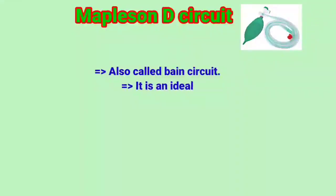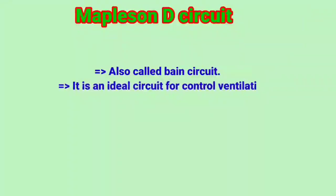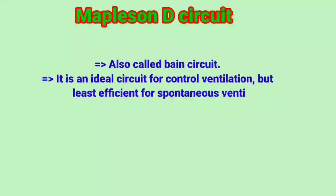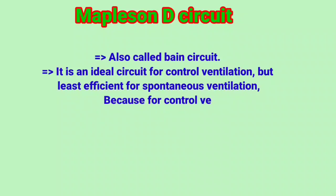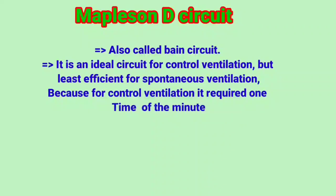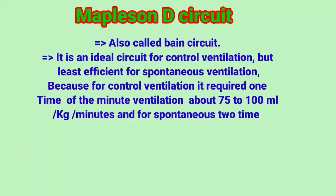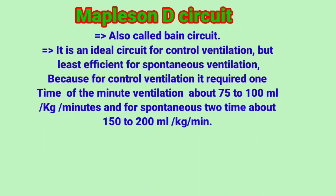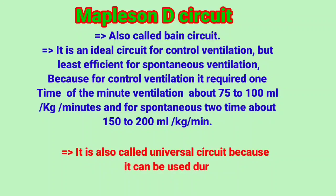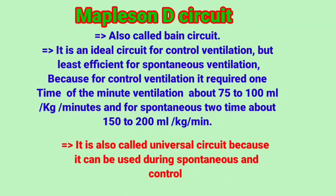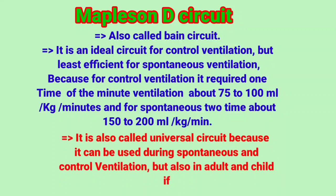Mapleson D circuit, also called the Bain circuit. It is an ideal circuit for controlled ventilation but least efficient for spontaneous ventilation. For controlled ventilation it requires approximately one times the minute ventilation, about 75 to 100 ml per kg per minute, and for spontaneous ventilation two times, about 150 to 200 ml per kg per minute. It is also called the universal circuit because it can be used during both spontaneous and controlled ventilation, and in both adults and children if no other option is available.